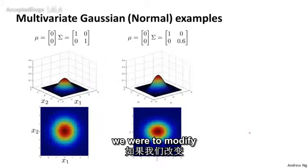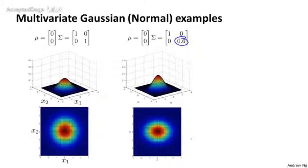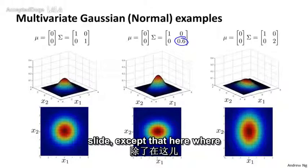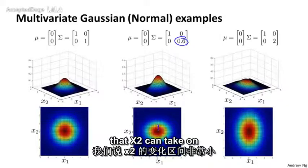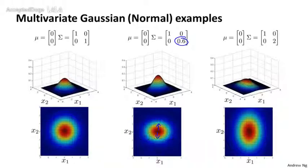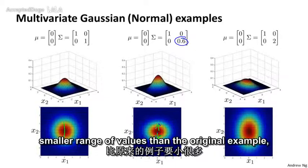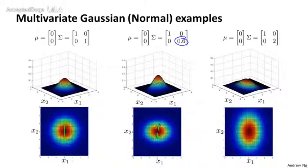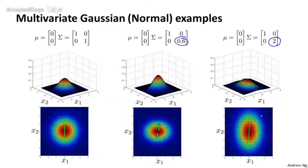And similarly, if we were to modify this element of the matrix instead, then similar to the previous slide, except that here we're saying that x2 can take on a very small range of values. And so here, this is 0.6, notice now x2 tends to take on a much smaller range of values than the original example. Whereas if we were to set sigma to 2, then that's like saying that x2 has a much larger range of values.